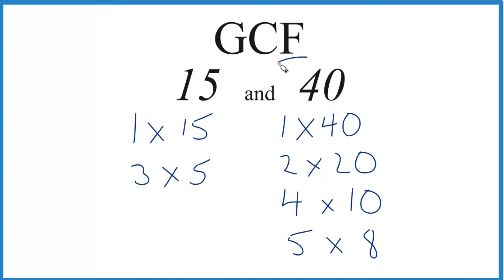So now we have our factors. Let's see what's in common. Well, 1 goes into 15 and 40, so that's a common factor. 3, no. 15 doesn't, but 5 - 5's a common factor between 15 and 40, and it's the greatest common factor.